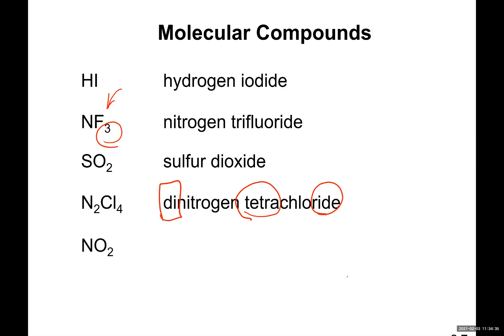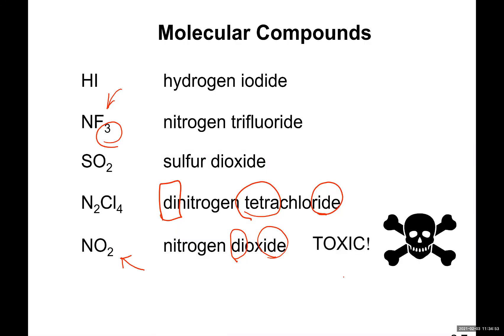And how about this one? Nitrogen dioxide. Di because there are two oxygens. -Ide because oxygen is coming last. And of course, this is a very toxic gas. It reacts with the moisture in your lungs. It makes nitric acid. It can cause a lot of damage.